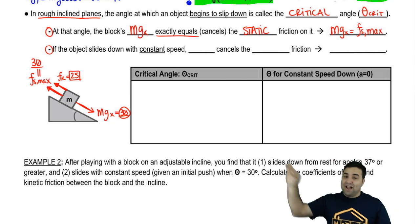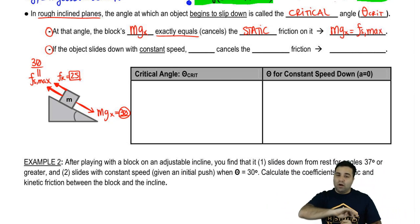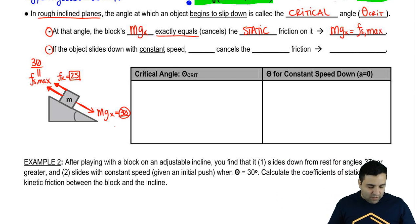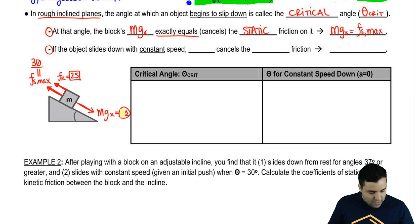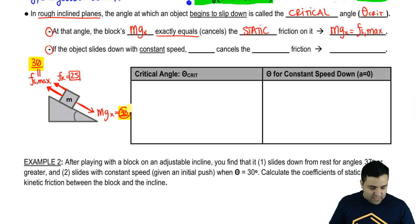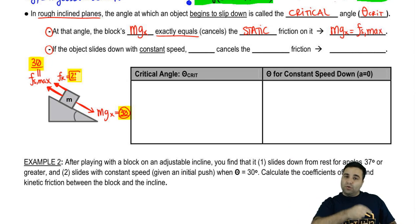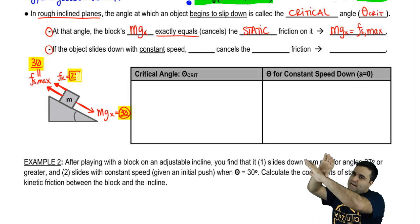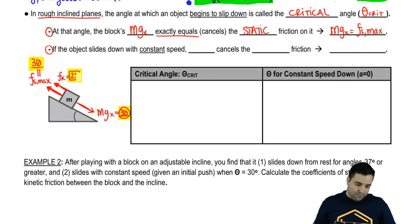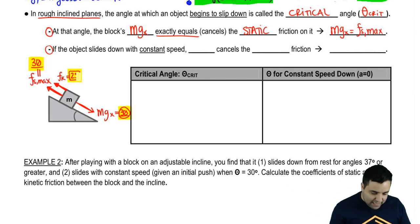So you're not just going to slide across — you're going to accelerate, because 30 was what was needed to overcome static friction, but 30 is bigger than the kinetic friction of 25. So the block accelerates down as soon as you break static friction.